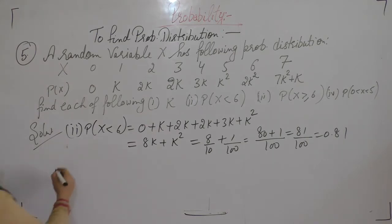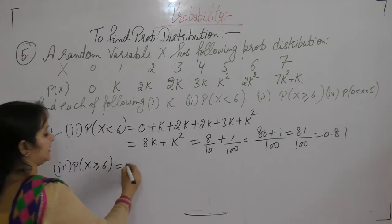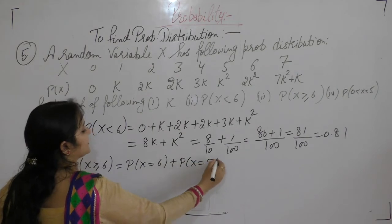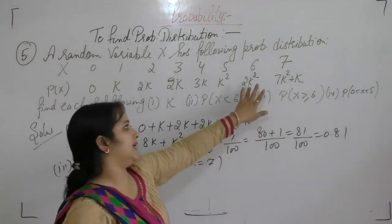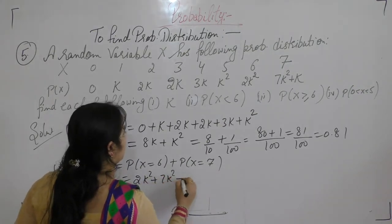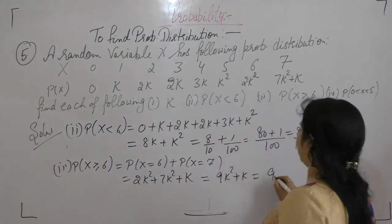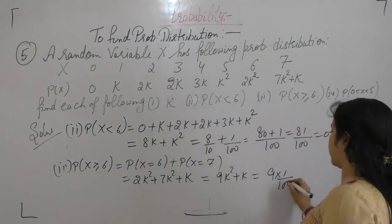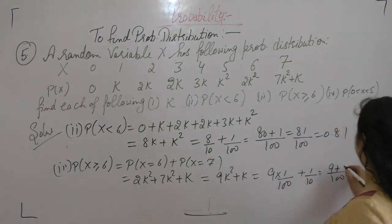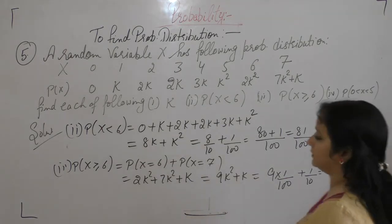Next is probability of X greater than or equal to 6. At x=6 or x=7: 2k squared plus 7k squared plus k gives 9k squared plus k. Putting k = 1/10: 9 times (1/10) squared plus 1/10 equals 9 plus 10 over 100, which is 19 by 100, that is 0.19.